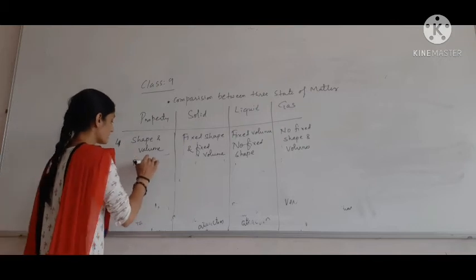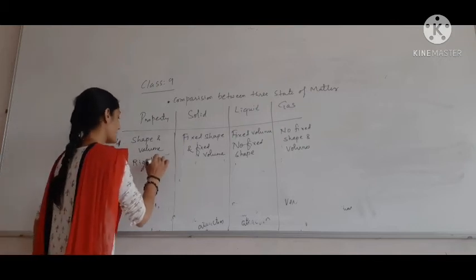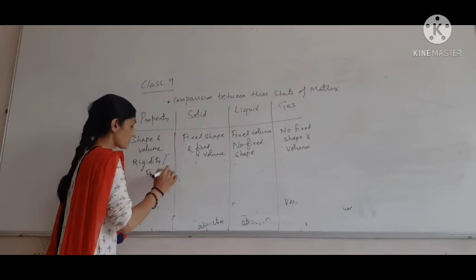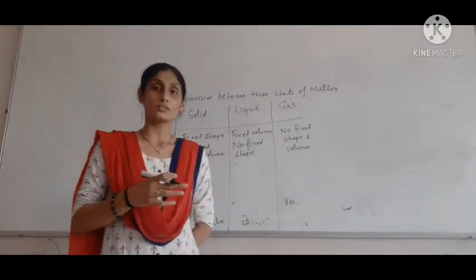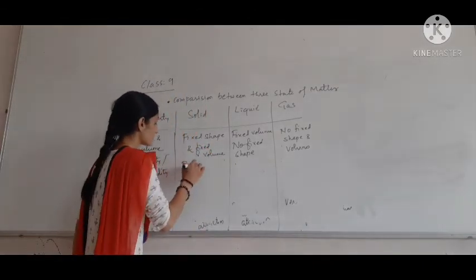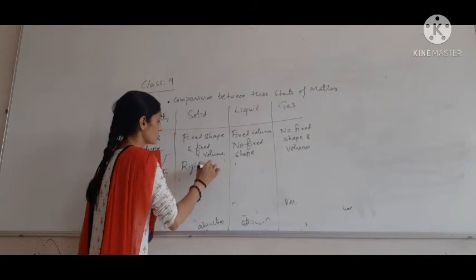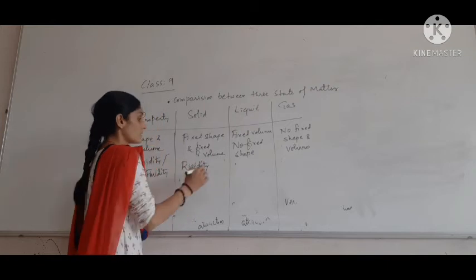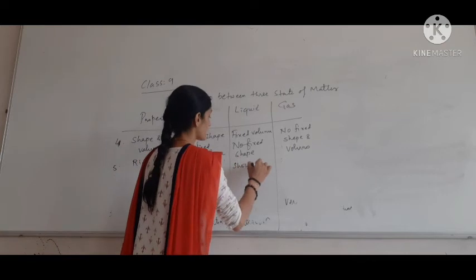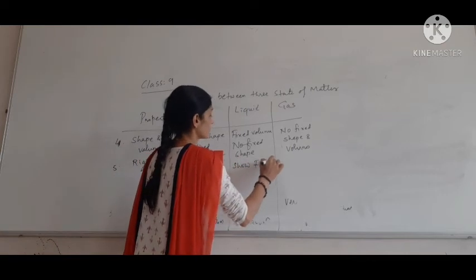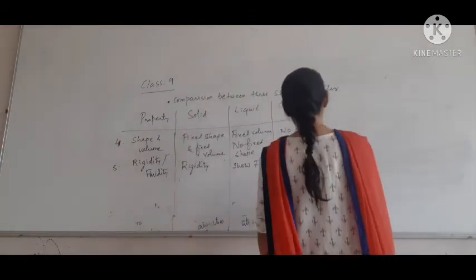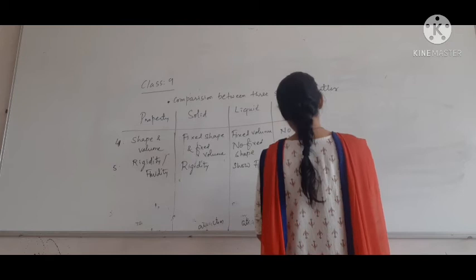The next property is rigidity and fluidity. Rigidity means that when pressure is applied to an object it does not bend or deform. Solids are rigid — they show rigidity. Liquids do not show rigidity; they show fluidity. Gases show the highest fluidity.